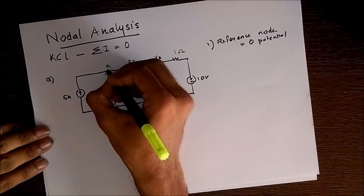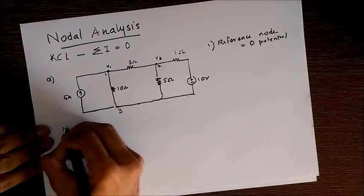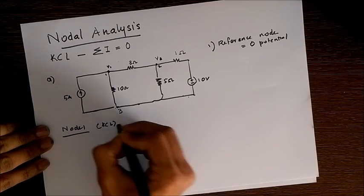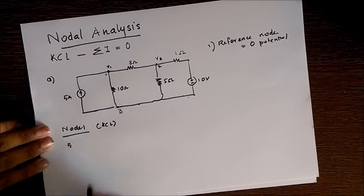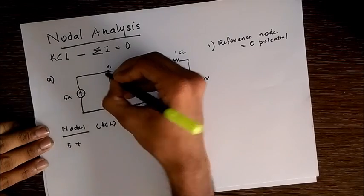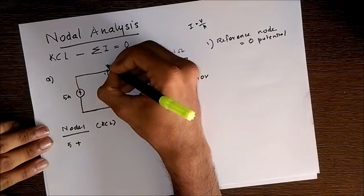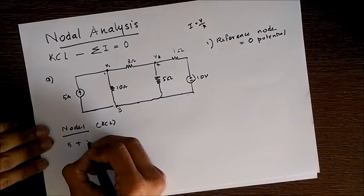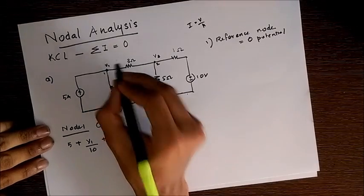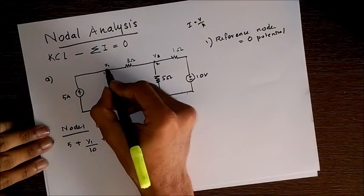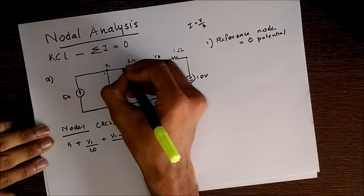Now we are going to apply KCL at these two nodes. In node one, applying KCL, the current from the current source is 5 ampere plus, to find current we use Ohm's law, that is I equals V by R. Here V is V1 minus 0, that is V1 by 10, plus V1 minus V2 by 3. Therefore I1 plus I2 plus I3 equals 0. This is our first equation.